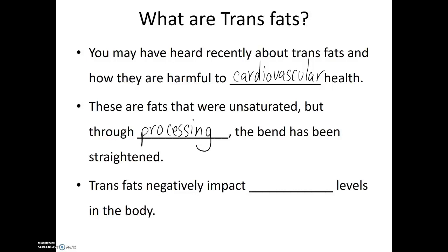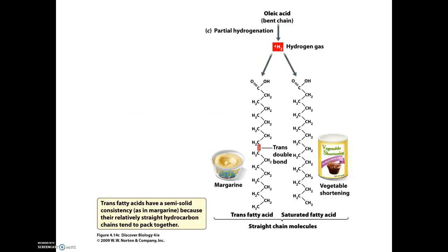Trans fats are helpful in giving texture to frosting, coffee creamer, and a variety of other foods. If you've ever seen "partially hydrogenated oil" on an ingredients label, that is a trans fat. Margarine is also an example of a trans fat. While trans fats have fewer calories than saturated fats, they do negatively impact cholesterol levels within the body. Margarine still has a carbon-carbon double bond, but that bond has been made linear — it is in its trans orientation instead of its cis orientation, which is why this molecule is called a trans fat.